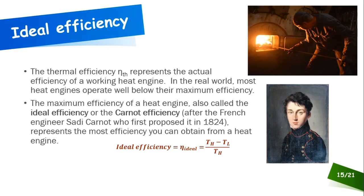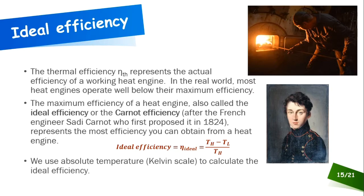To calculate Carnot efficiency: take the high temperature, subtract the low temperature, and divide by the high temperature. Critically, the temperatures must be in Kelvin for this equation to work. If given temperatures in Celsius or Fahrenheit, you must first convert to Kelvin. Once you have temperatures in Kelvin, you can calculate ideal efficiency — remembering that using Kelvin is the most important point about this equation.